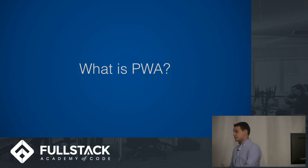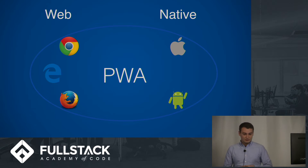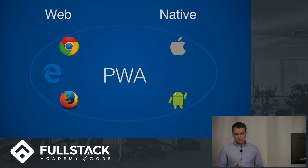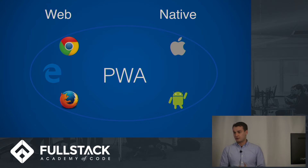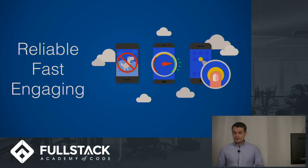So what are Progressive Web Apps? Progressive web apps are a solution for the problems that native apps have, and also for the problems which web apps don't have. Basically, in order to get a native application you need to go to the app store, download it, and install it — that's a lot of steps. It also takes a lot of memory space on your phone. Progressive web apps try to solve this by being reliable, fast, and engaging.